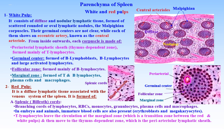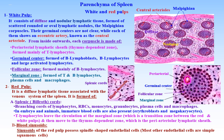T lymphocytes leave the circulation at the marginal zone, which is a transition zone between the red and the white pulps. T lymphocytes then move to the thymus-dependent zone, which in the spleen is present in the peri-arterial lymphatic sheaths. Blood sinusoids are regular wide blood channels lined with specialized spindle-shaped endothelial cells, unlike most other endothelial cells which are simple squamous cells. Endothelial cells are surrounded by a non-continuous basement membrane, which facilitates the passage of blood from the tissue of the red pulp to the bloodstream.